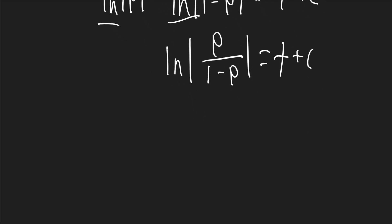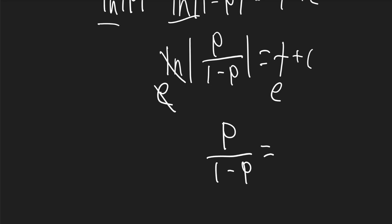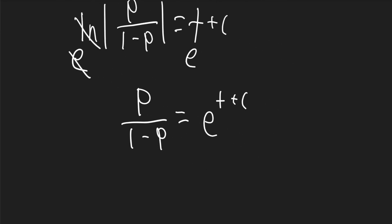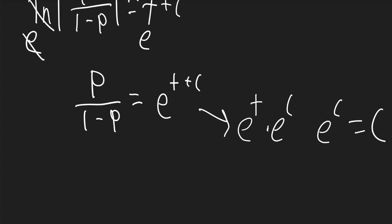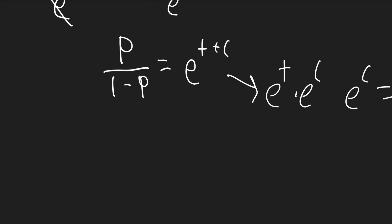Now we can take the exponential of both sides. The e will cancel the ln, so we get p over (1 - p) is equal to e^(t + C). This term becomes e^t times e^C, and since e^C is just a constant, that term becomes Ce^t.